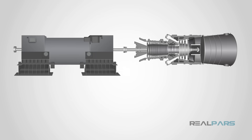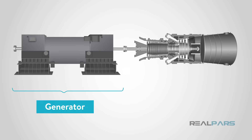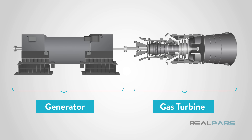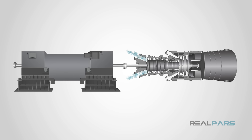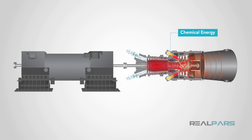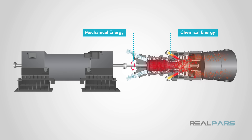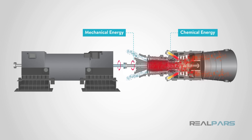In a gas turbine power plant, there is a generator which is an electrical machine. But to generate electricity, this generator needs a prime mover, which in this example is a gas turbine. The gas turbine transforms the chemical energy in the fuel — for example natural gas or similar fuel — into mechanical energy. The mechanical energy generated by the turbine exit shaft is then transferred through a gearbox to the generator's shaft, allowing the generator to create electrical energy.